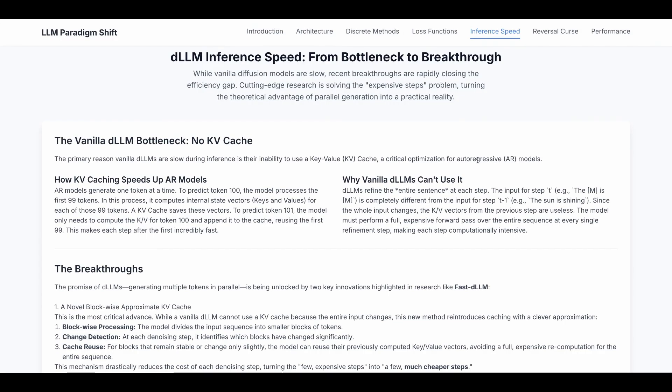The primary reason vanilla DLMs are slower during inference is their inability to use KV cache, a critical optimization for autoregressive models. Autoregressive models generate one token at a time. For example, to predict token 100, the model processes the first 99 tokens. In this process, it computes internal state vectors, keys and values, for each of those 99 tokens. And when we use KV cache to save these vectors, in order to predict the token 101, the model only needs to compute the keys and values for token 100 and append it to the cache, reusing the first 99. This makes each step after the first incredibly fast.